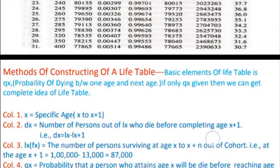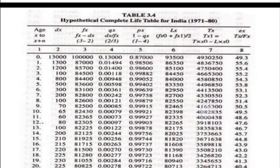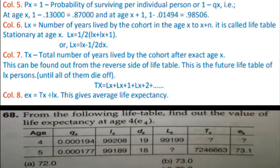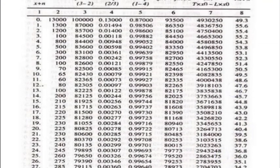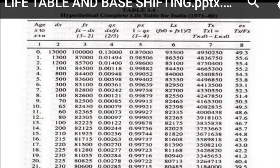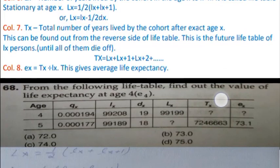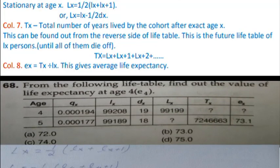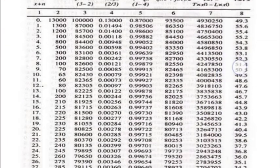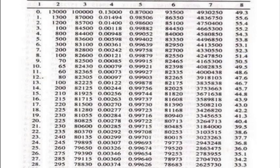Tx is the total number of years lived by the cohort after age x. This is found from the reverse side of the life table — it is the cumulative future of lx until all of them die off. To calculate T0, T1, T2, we subtract from the first row. Alternatively, Tx = Lx + Lx+1 + Lx+2 + ... summing all remaining Lx values.